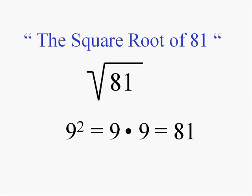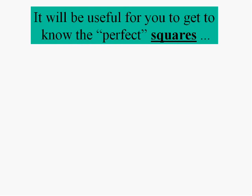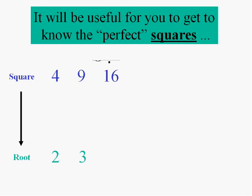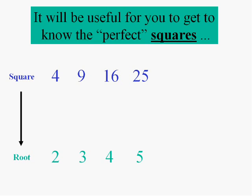It will be of use to you to know what we call the perfect squares and their roots. The square root of 4 is 2. The square root of 9 is 3. The square root of 16 is 4. The square root of 25 is 5. The next perfect square is 36; the square root of 36 is 6. And the square root of 49 is 7.